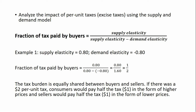The key formula is given by this: the fraction of tax paid by buyers will equal the price elasticity of supply divided by the price elasticity of supply minus the price elasticity of demand. We're going to do a number of examples here showing the usefulness of this formula.